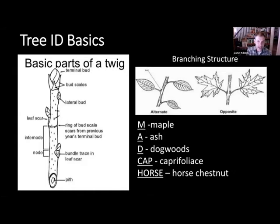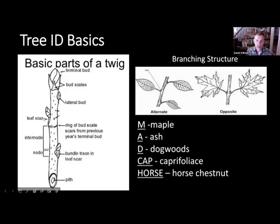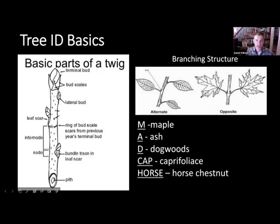If we look at a twig, you can take any live branch on that tree, and it'll have buds along the sides and one at the very tip. The buds are where next year's leaves are going to emerge for growth in the spring. The bud on the end is called the terminal bud because it's on the terminus of the twig. The buds on the sides are called lateral buds. The shapes of these buds, and sometimes the leaf scars, can be very distinctive and are often a primary indicator of what species you're looking at.